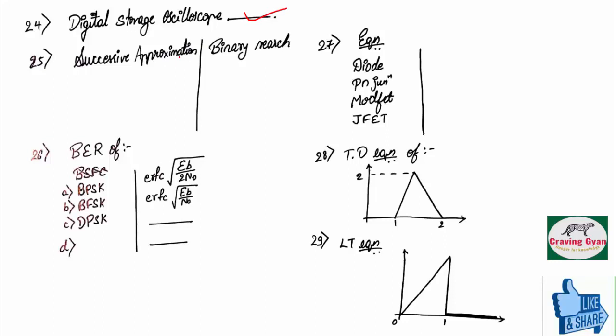They have given successive approximation. Straight away, I have related to binary search. And you know, a dual slope make use of linear search.